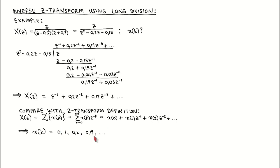Long division is a good method to quickly find the first few values of a time domain signal, but not to find an analytic description of the signal.